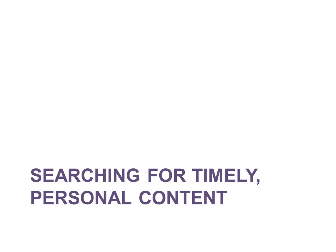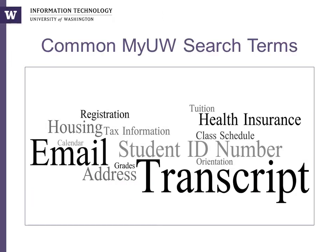The biggest learning from the data analysis is that students are looking for timely, personal content. Users can search MyUW to find specific content. This word cloud shows the most common content that users searched for during the 2012-2013 school year, with the size of the word indicating the frequency of searches. Search term data gives a clear picture of the resources students seek most often. The most common information students search for is personal content such as their transcript, student ID number, address, class schedule, tuition, and email. The second most common group of search terms indicates that students are looking for timely information such as registration, housing, tax information, and orientation. The frequency of searches could be related to both how frequently students need information and how difficult that information is to find on MyUW.